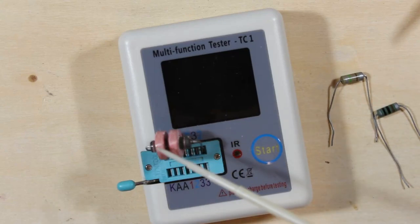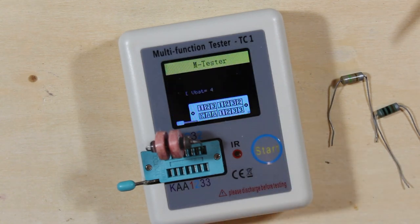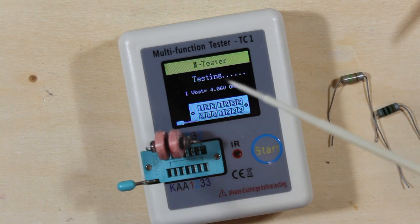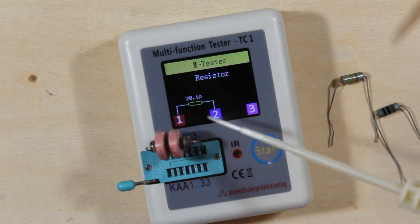I was wanting to find out what the value of this inductor is, but when I put it in my little tester here, it doesn't like it. It just tells me that it's a resistor. We see that this tells us that it's a 20.1 ohm resistor.